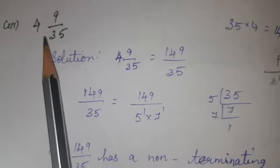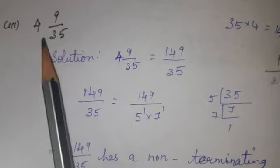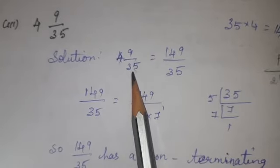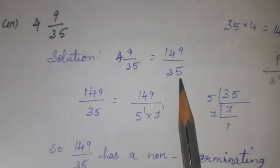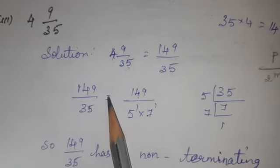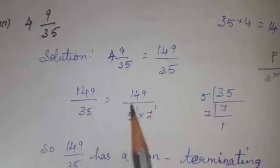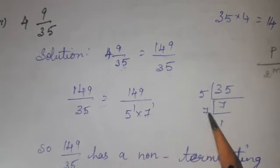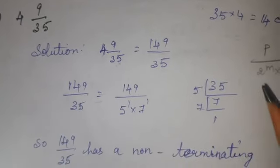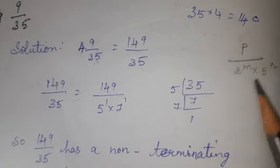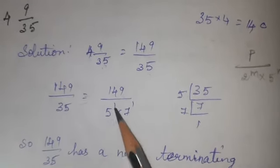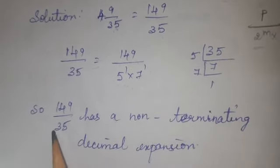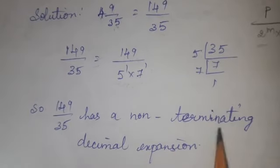Third question: 4 and 9/35. This is a mixed fraction, so convert it to an improper fraction: 4 × 35 = 140, plus 9 = 149. So it becomes 149 divided by 35. Factorizing 35: 5 × 7, giving 5 power 1 × 7 power 1. Our format requires 2 power m × 5 power n, but here 7 is appearing extra and 2 power is missing. Therefore, 149 divided by 35 has a non-terminating decimal expansion.